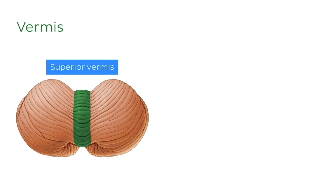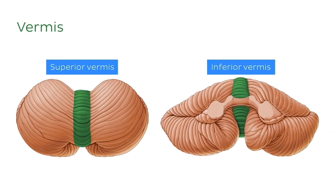If we take a look at an inferior view of the cerebellum, we can now see the inferior vermis pointed out here, and we can also see the most anterior portions of the superior vermis as well.